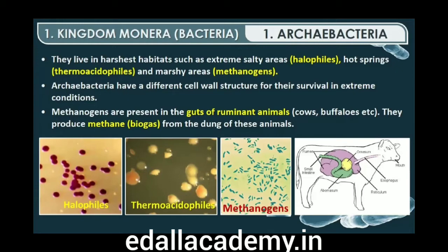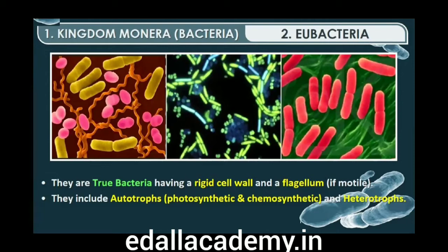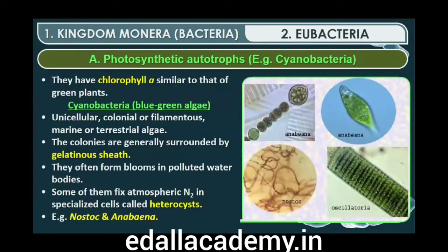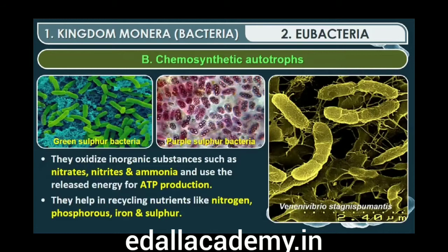Second are eubacteria — true bacteria. There are thousands of different eubacteria, characterized by the presence of a rigid cell wall and, if motile, a flagellum. Cyanobacteria, also referred to as blue-green algae, have chlorophyll similar to green plants and are photosynthetic autotrophs. They are unicellular, colonial or filamentous, freshwater, marine or terrestrial algae. The colonies are generally surrounded by a gelatinous sheath, and they often form blooms in polluted water bodies. Some can fix atmospheric nitrogen in specialized cells called heterocysts — for example, Nostoc and Anabaena. Chemosynthetic autotrophic bacteria oxidize various inorganic substances such as nitrates, nitrites and ammonia, and use the released energy for ATP production. They play a great role in recycling nutrients like nitrogen, phosphorus, iron and sulfur.